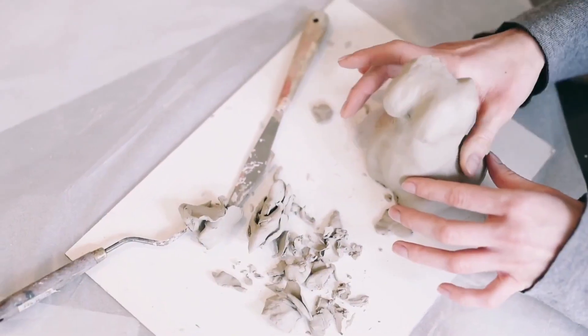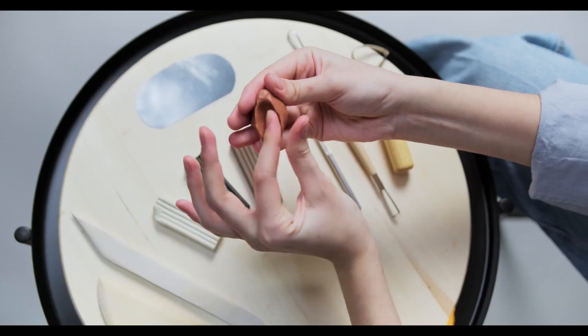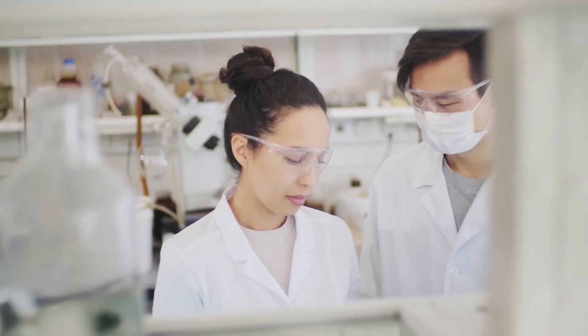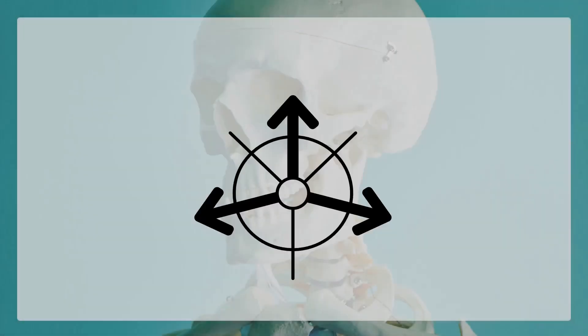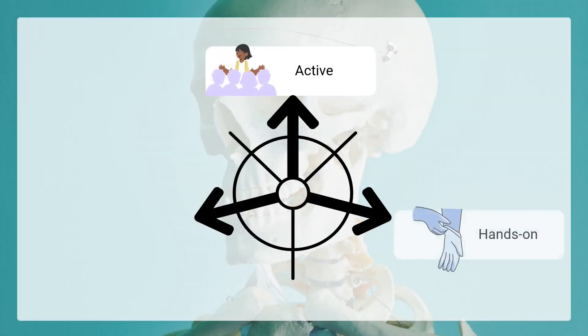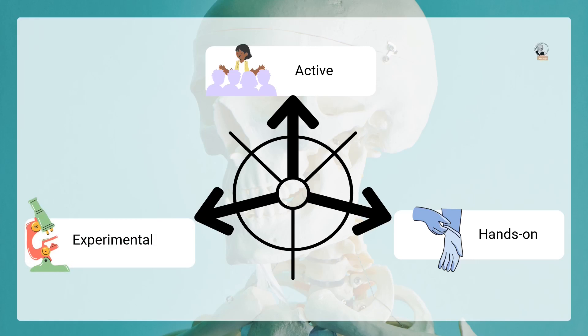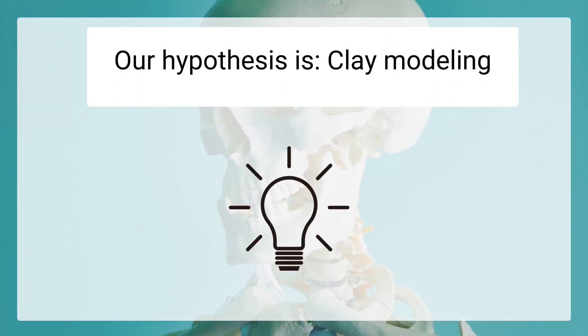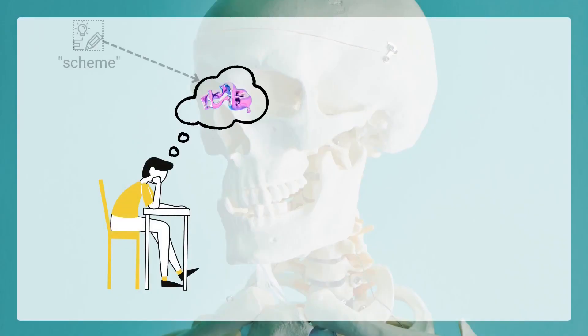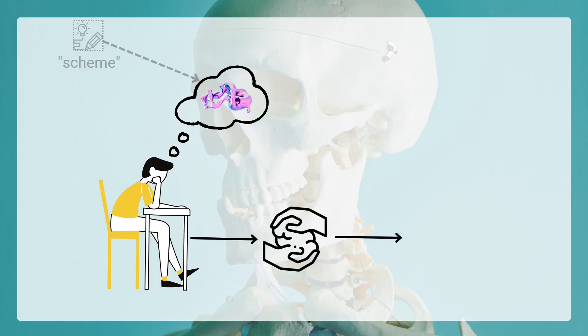This approach to learning anatomy has long needed a transformative change — one that moves beyond passive observation to active pedagogy, hands-on engagement, and experiential learning. Our study addresses this critical question by exploring the power of constructivist theories, which emphasize active learning through hands-on experiences. Our question is: how can we see what the student imagines?